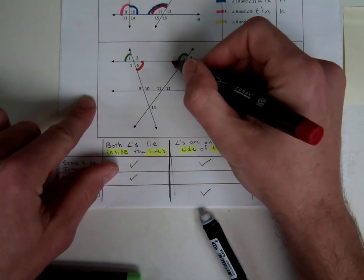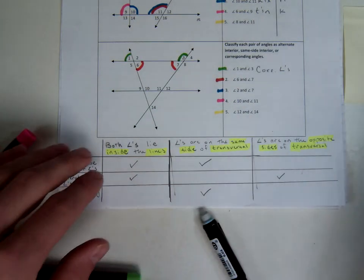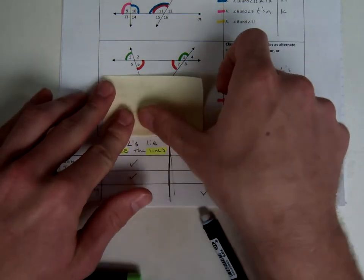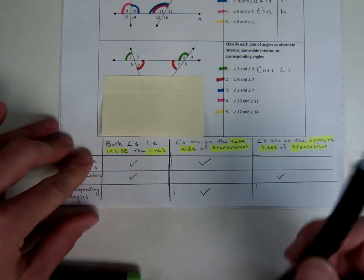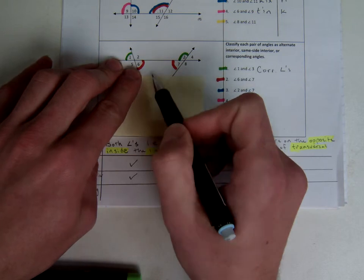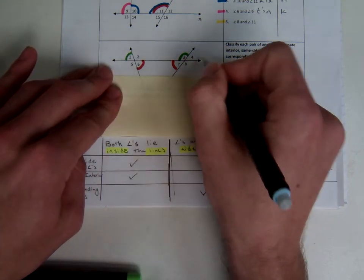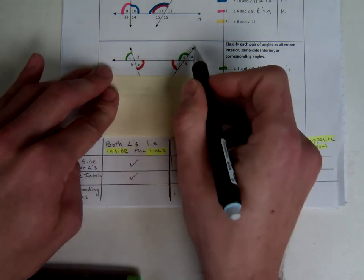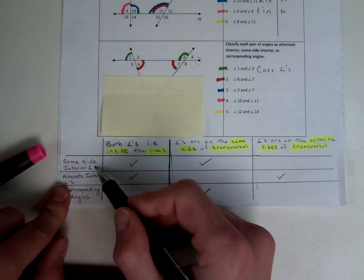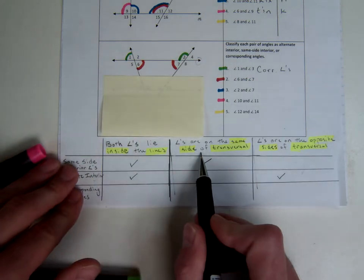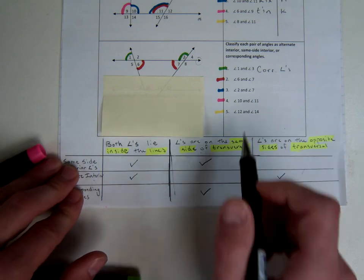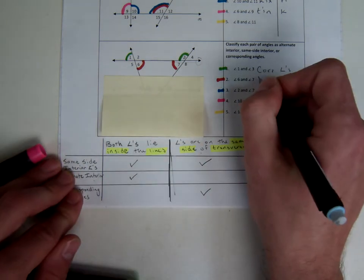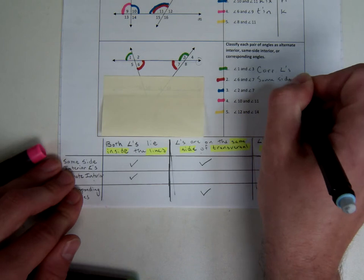Moving on to angles 6 and 7 — I feel confident I can cover up the last line so I'm not getting confused, and fold my paper so I can still see my chart. The angles are bounded by two lines, making this line the transversal. This time our angles are both on the inside, so it could be same side interior or alternate interior. I check to see if they're on the same side of the transversal, and they are, so this would be same side interior.